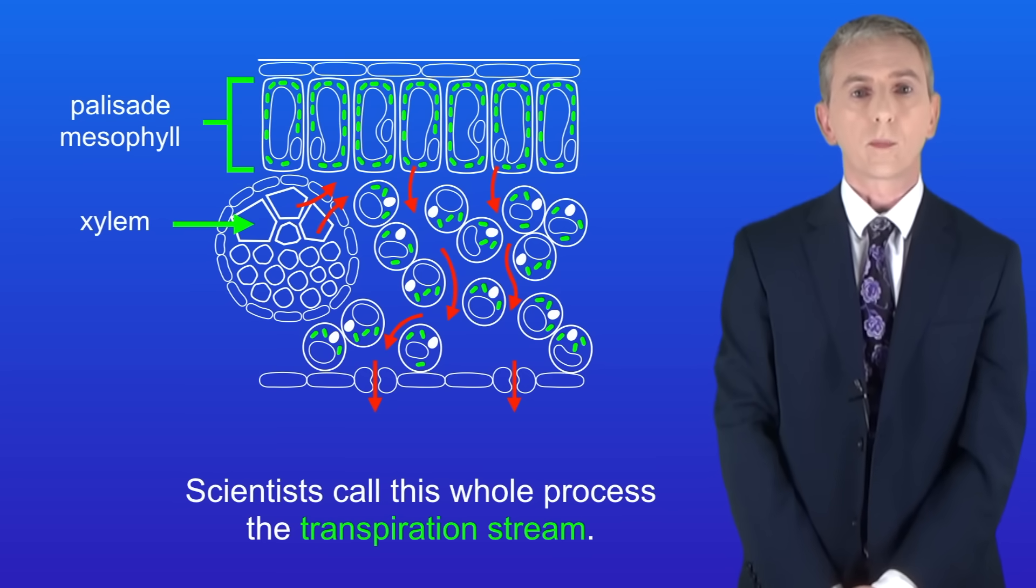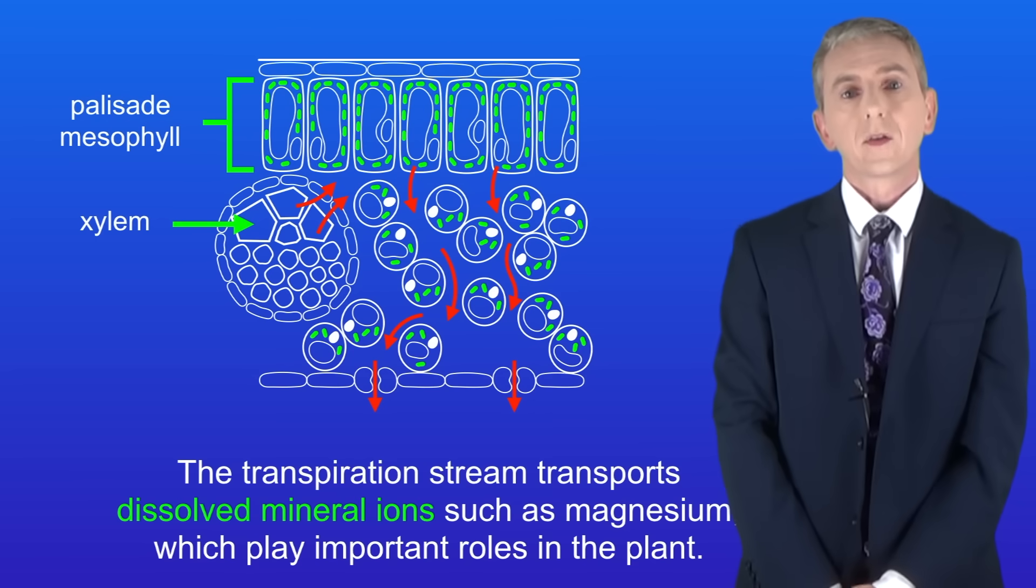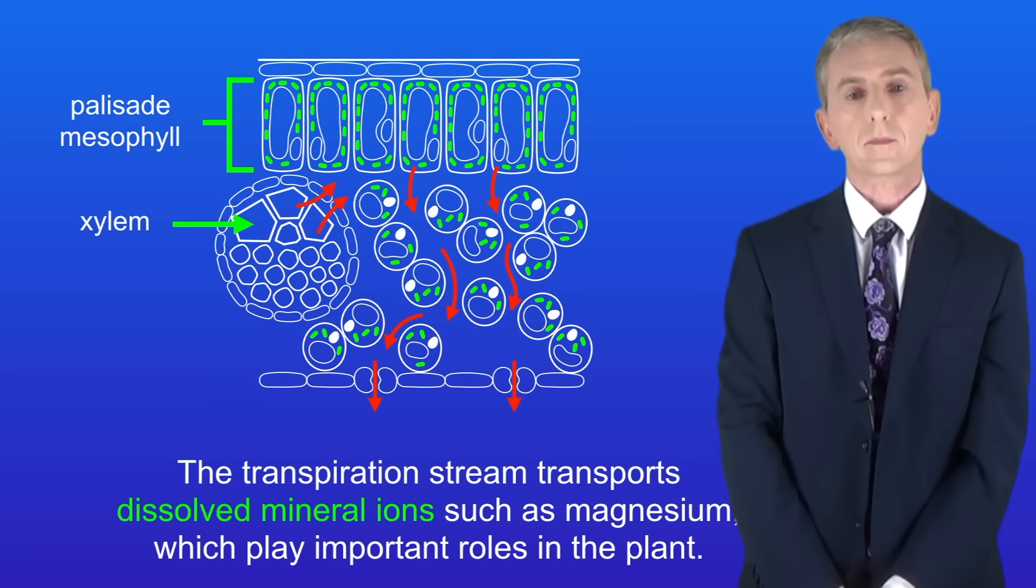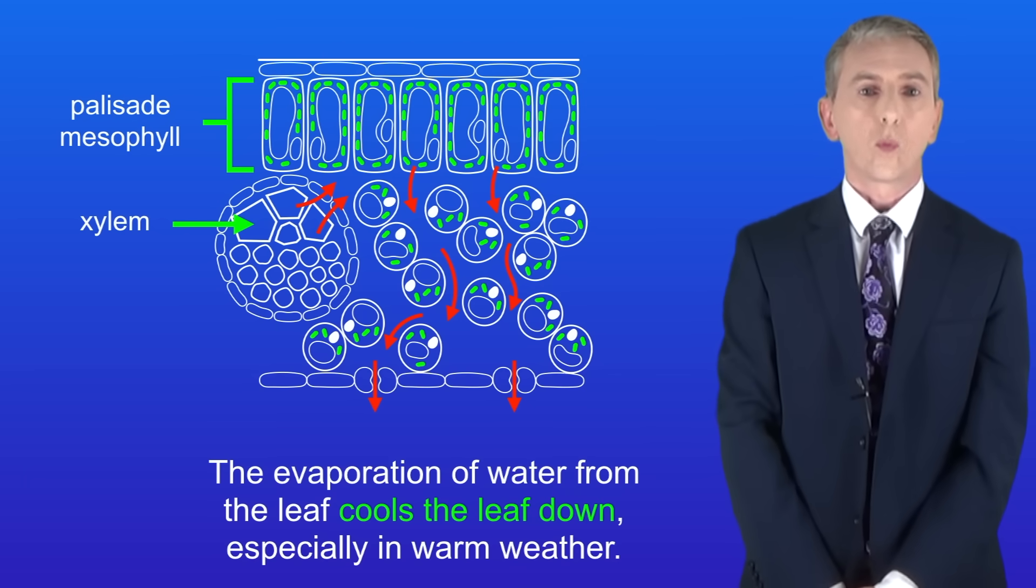Transpiration is a really important process. Firstly, transpiration brings water to the leaf and water is required for photosynthesis. Secondly, the transpiration stream transports dissolved mineral ions such as magnesium which play important roles in the plant. And finally, the evaporation of water from the leaf cools the leaf down, which is really important in warm weather.